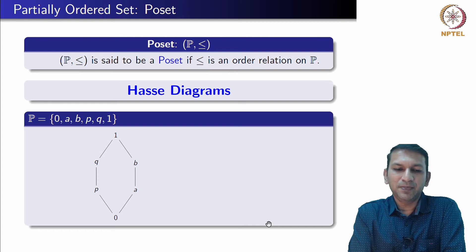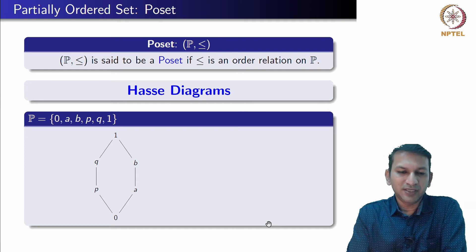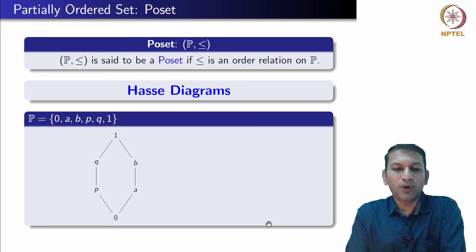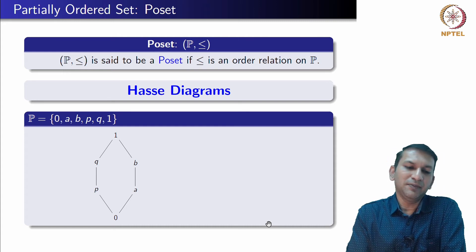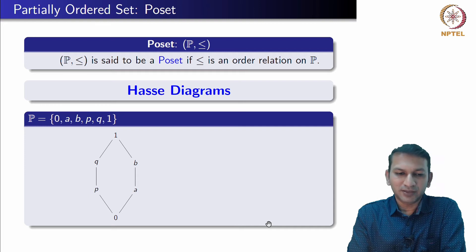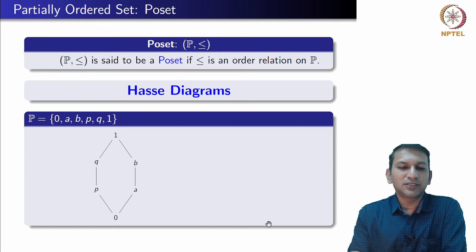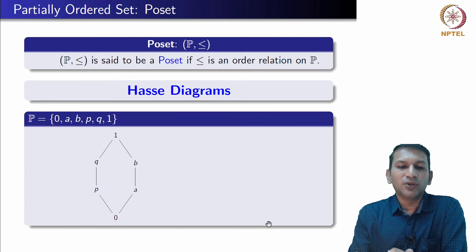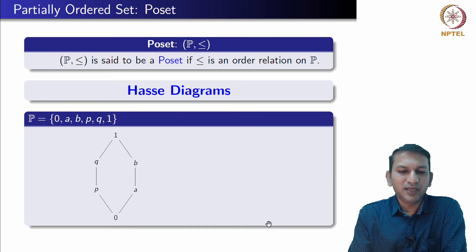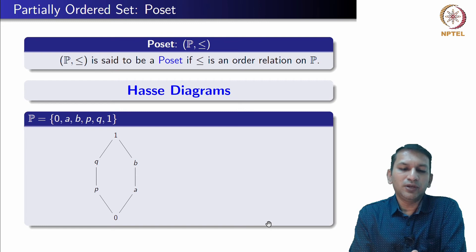How do we decipher the Hasse diagram? If there is a line between two elements, they are related as predecessor and successor. So 1 is related to p, and q is related to p, and p is related to 0. As you go from bottom to top, you can think of it as an increasing relationship. It is clear from this diagram that p and b are not related, nor is p and a. Similarly, q is not related to either a or b under the given ordering.